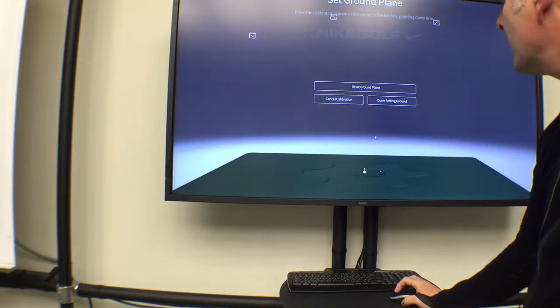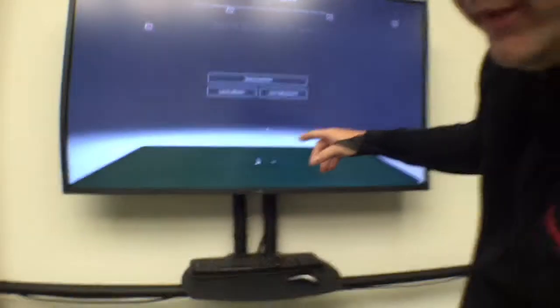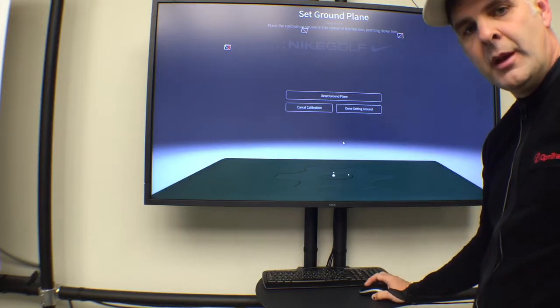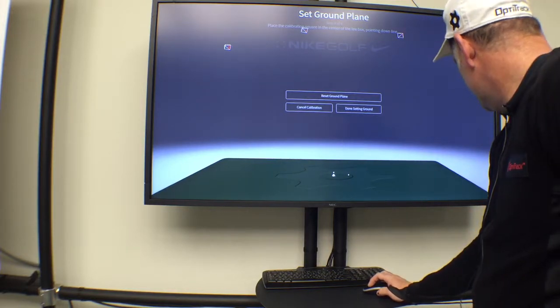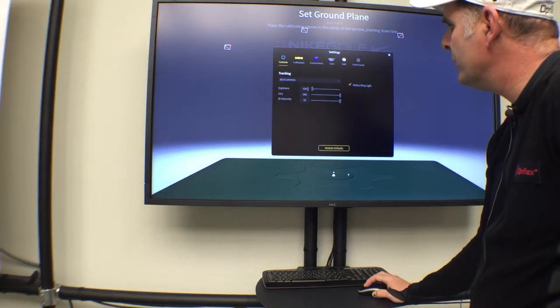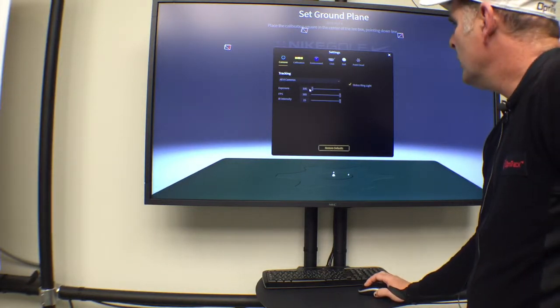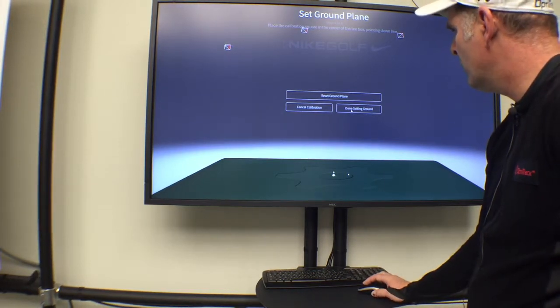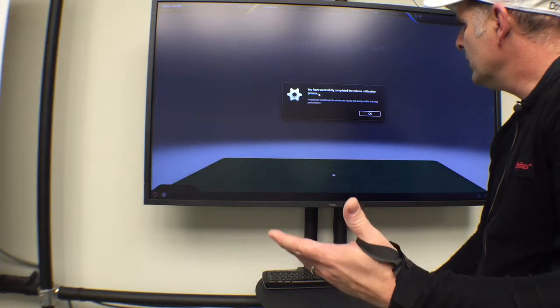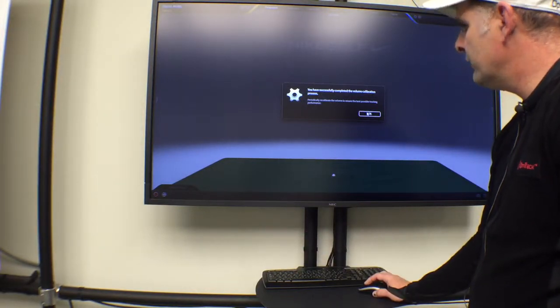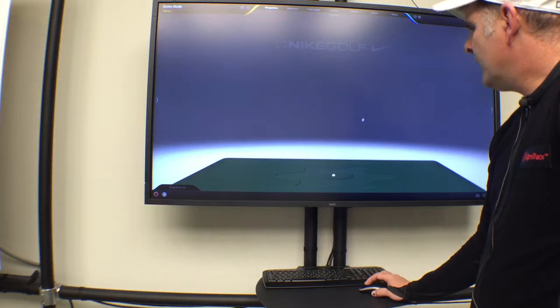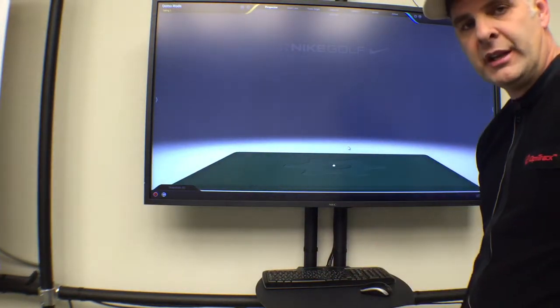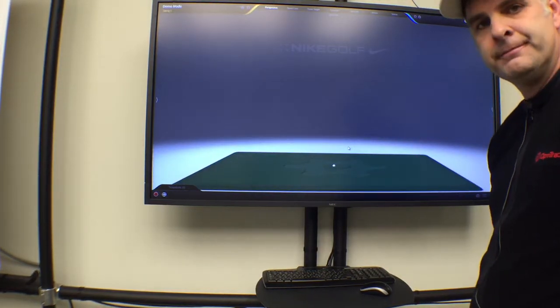You just press this button called Set Ground Plane. If it doesn't find it or for some reason it doesn't see those markers, you might have to adjust the exposure a little bit, maybe down a little bit if you have a lot of light in the room. But generally speaking, that's usually what happens there. Once that's down, you hit Done Setting Ground Plane. You have successfully completed the volume calibration process. That file is now—this room is now officially calibrated, and you're good to go.